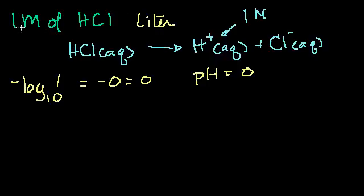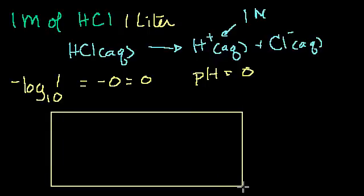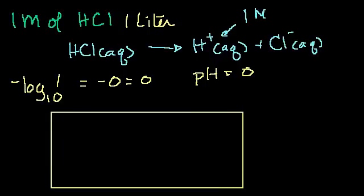This molarity just tells me how many moles per liter, and since I have 1 liter, I have 1 mole. Let me make a little chart here — a little box — and let's make this axis right here. This is going to be my pH.